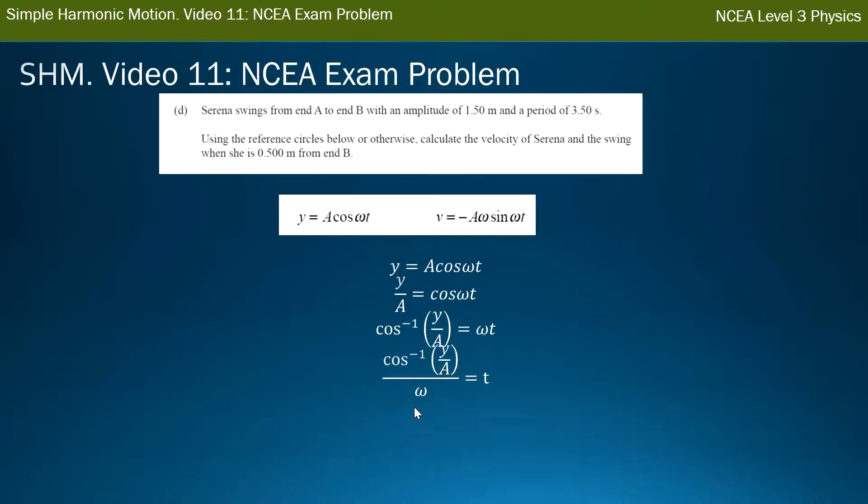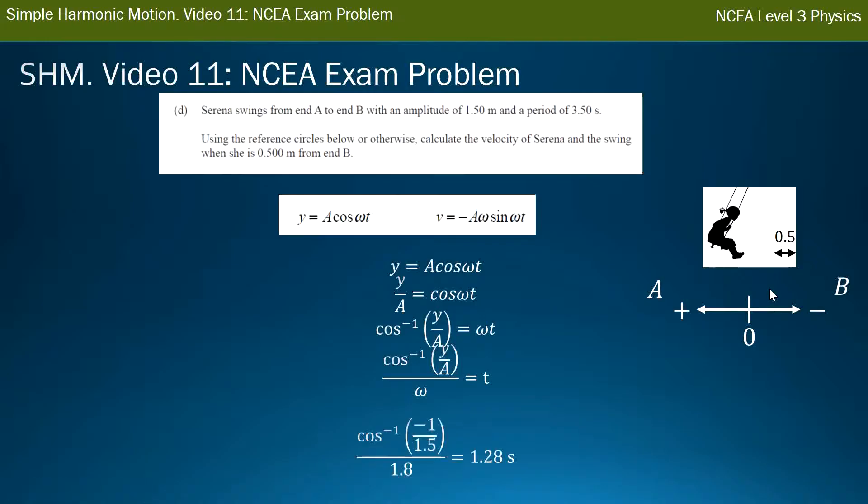So, this is my rearrangement of that. I'm not going to talk through it, because I might complicate you. But you should pause this and see if you can do this rearranging to find what t is, given all the other values. Once I've rearranged it, I've got to put everything into the value. I have A. That's easy. I have omega. That's easy. What's my Y? Now she said she's 0.5 meters from the end. Here, back to my coordinate system. 0.5 meters from end B is not 0.5 meters from the middle. It's 0.5 meters from the end. Right? Which means that her actual position, given that the amplitude is 1.5 meters, from 0 all the way to B is 1.5 meters.